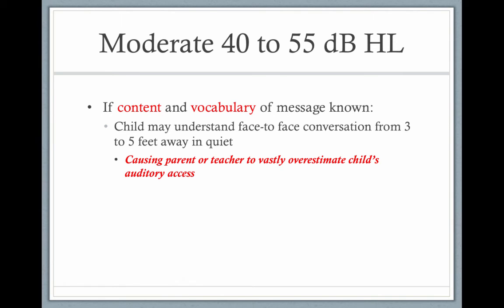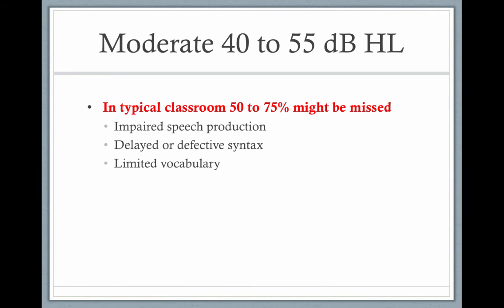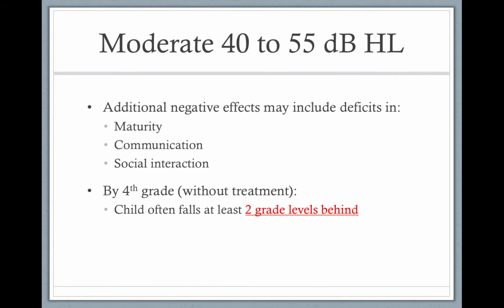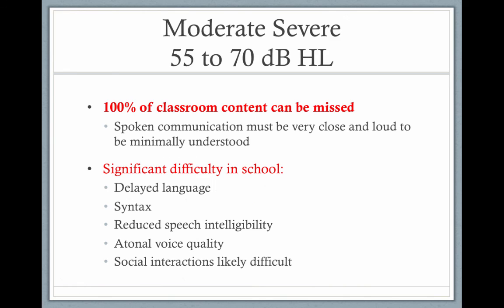With a moderate hearing loss from 40 to 55 dB HL, if the content and vocabulary of the message are known, the child might manage face-to-face conversations, causing parents or teachers to overestimate their auditory access. But they typically miss 50 to 75% of classroom learning, showing impaired speech production, delayed or defective syntax, and limited vocabulary. Additional negative effects include deficits in maturity, communication, and social interactions. By fourth grade without treatment, these children are often two grade levels behind.